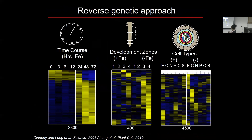To address this question, we did a lot of microarray analysis — the hot tool at the time. We developed a time course of the iron deficiency response, looking at whole roots between zero and 72 hours of exposure to iron deficiency. We saw a major shift at the 24-hour time point, so we then sliced the root into specific developmental zones and checked the microarray analysis, and then looked at specific cell types.